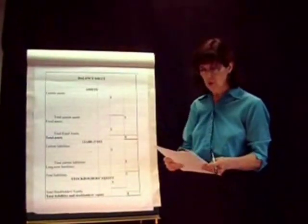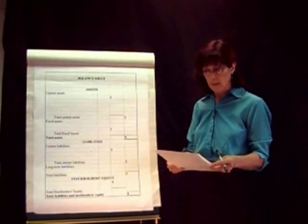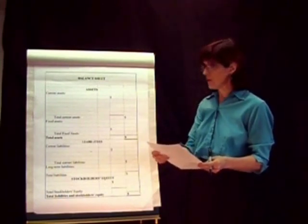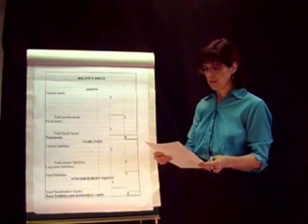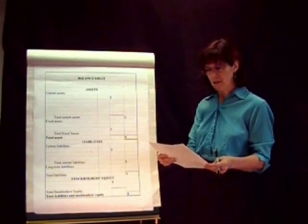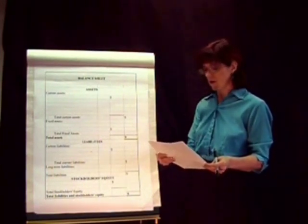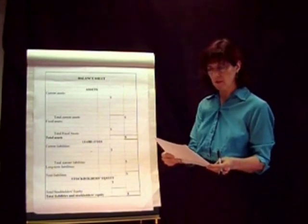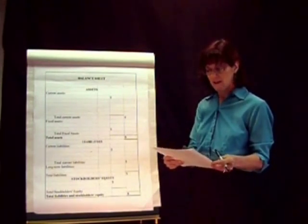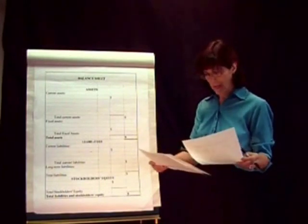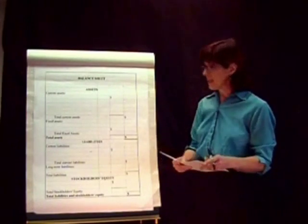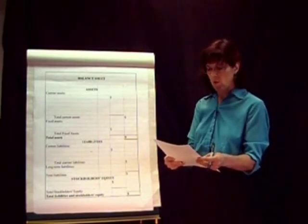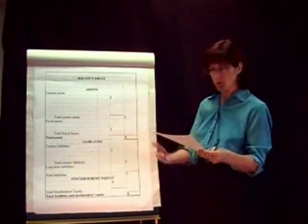Now we have a practice problem. If you look at your handout, there's a problem for the Shoe Shown Company. After all their accounts have been closed as of June 30, 2011, the balances of selected ledger accounts are listed in alphabetical order. My recommendation when you're starting out is to look at each account and ask: what type of account is it? That will tell you where to put it on the balance sheet.